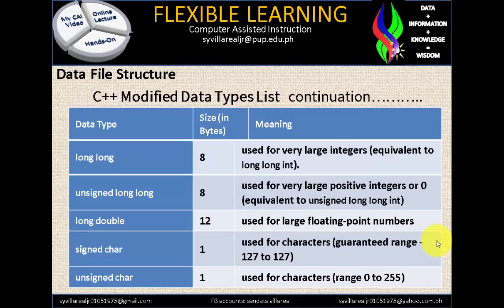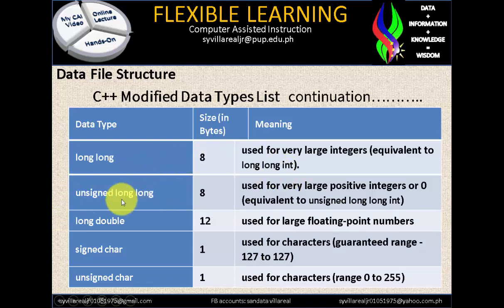Continuing C++ modified data types: long long has size 8, used for very large integers, equivalent to long long int — something like millions, billions, trillions, quadrillions, quintillions. Unsigned long long: size 8, used for very large positive integers or 0, equivalent to unsigned long long int.